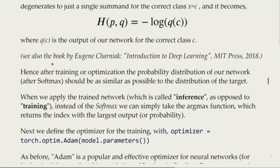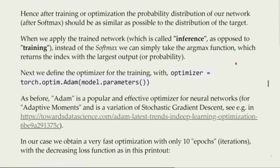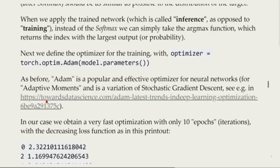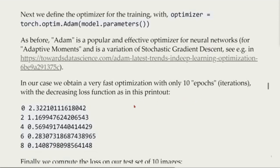You can see more about this in the book Introduction to Deep Learning. The output should be as similar as possible to the target. When we apply the trained network, which is inference opposed to train, instead of the softmax we can simply take the argmax function, which returns the index with the largest probability. Next we will define the optimizer for training, and in this case we are going to use Adam. We will obtain a very fast optimization with only 10 epochs or iterations with decreasing loss function.